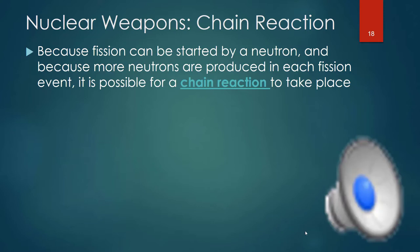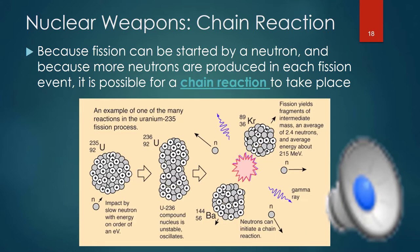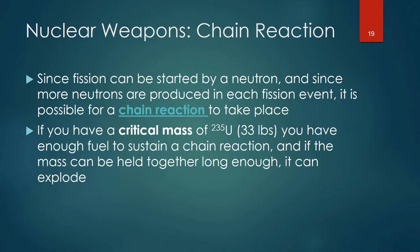Fission can be started by a neutron, and three more neutrons are generated as a result of the fission of uranium. Because even more neutrons are produced as products, it's possible for a chain reaction of nuclear fission to take place as long as you have enough uranium-235 present. If you have a critical mass of uranium-235 — about 33 pounds of that isotope — you have enough fuel to sustain a chain reaction and cause all of it to go through fission.